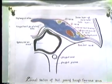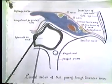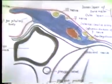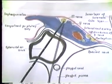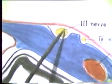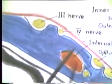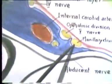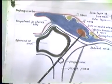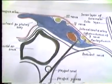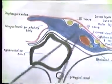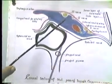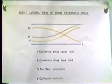Here you are seeing a coronal section through the skull and the cavernous sinus. This is the sphenoidal air sinus; this is the cavernous sinus with venous blood and all the structures passing through it. The oculomotor nerve travels in the lateral wall of the cavernous sinus as the topmost structure. Below it is the trochlear nerve, below that the ophthalmic division of the trigeminal, and still below the maxillary division. Within the cavernous sinus are the internal carotid artery and the abducent nerve.